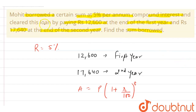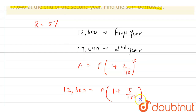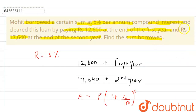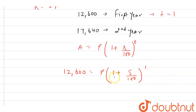As the question says he cleared his loan by paying Rs 12,600 at the end of the first year, we can say the amount is 12,600. So 12,600 equals P into (1 + 5/100), and since the time period is 1 year, T equals 1. Now let's find P from here.